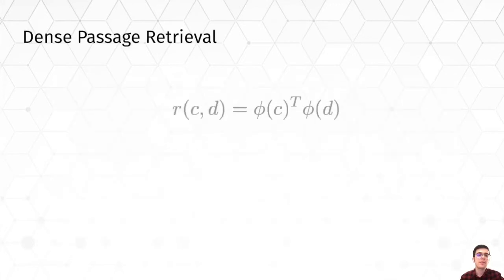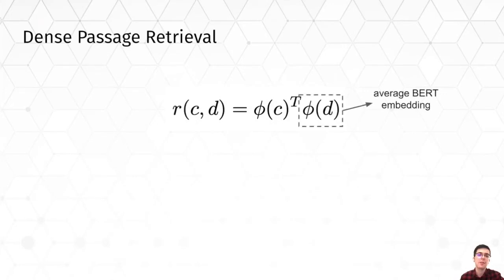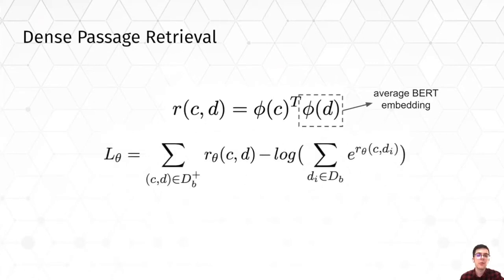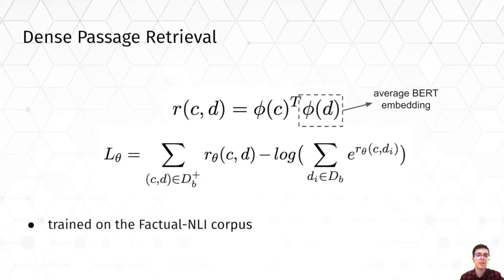The passage retrieval in QINPlus is done using a dense retrieval model based on BERT. It creates dense vectors for passages by calculating their average token embeddings. The relevance of a passage D to a claim C is then given by the dot product of their embeddings. We fine-tuned the BERT model on a recently introduced synthetic dataset by minimizing the sampled softmax loss. Efficient large-scale retrieval is possible using an approximate nearest neighbors index.